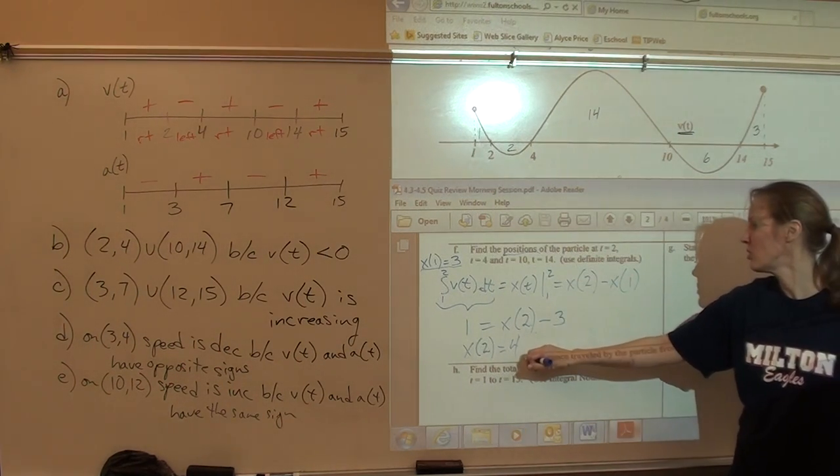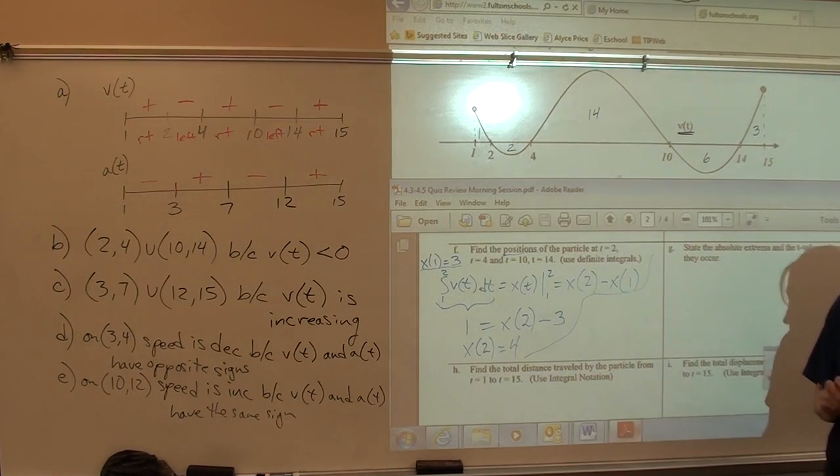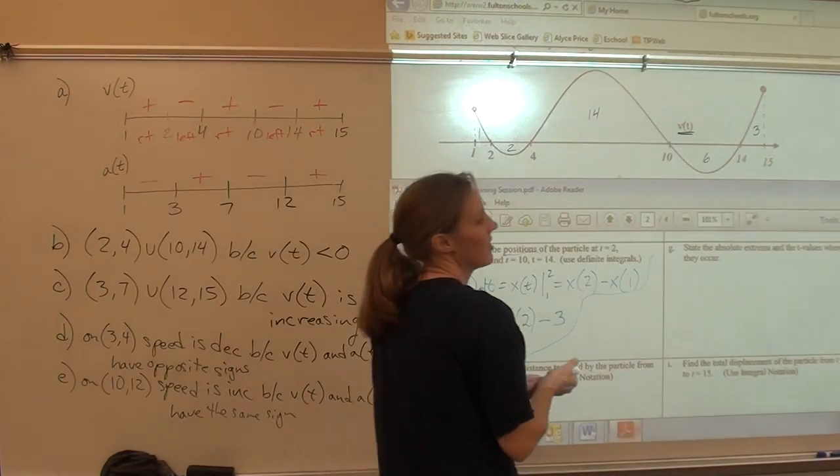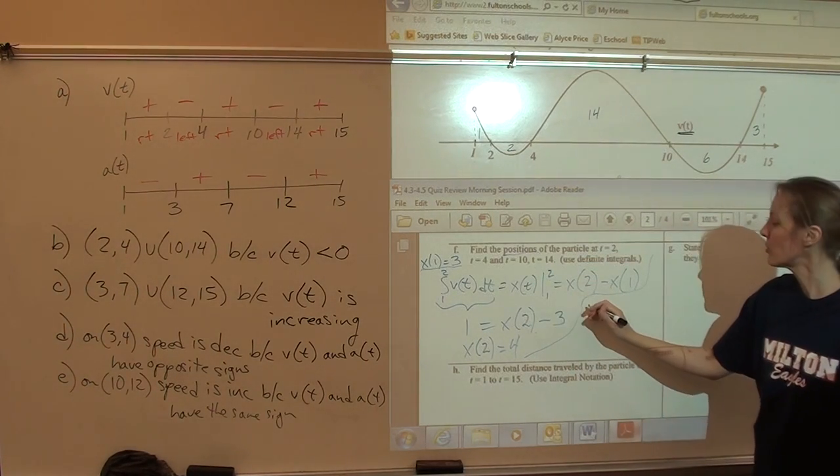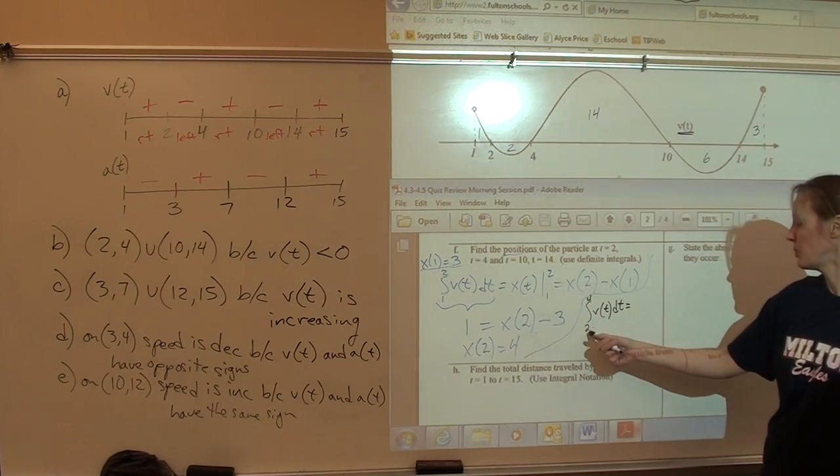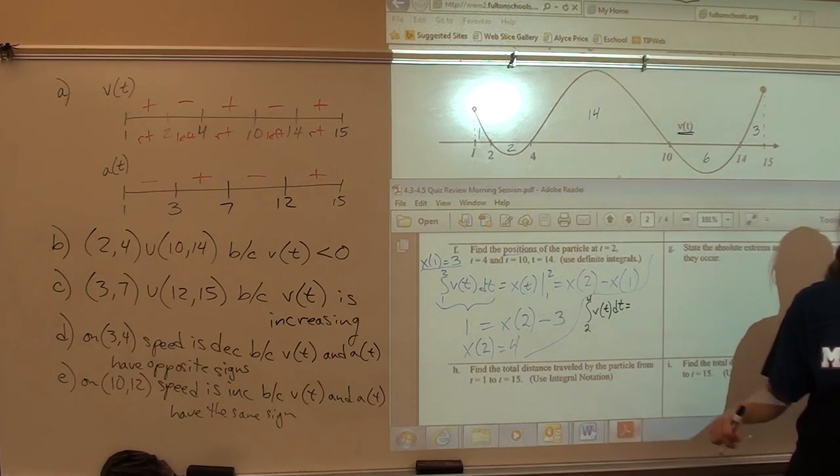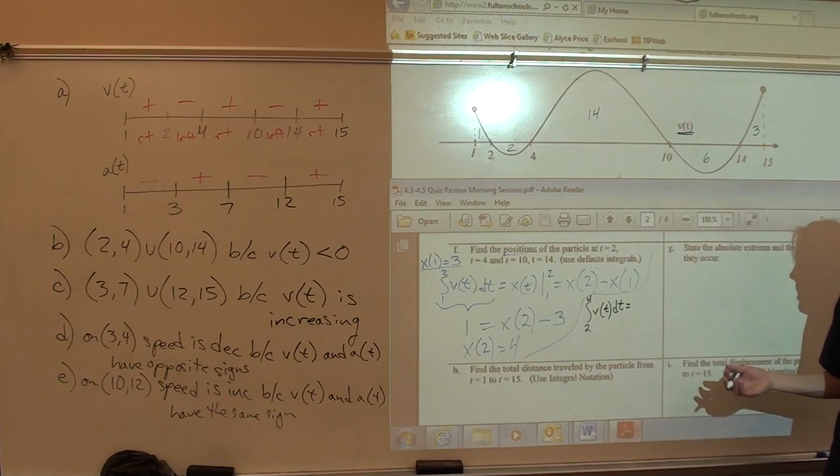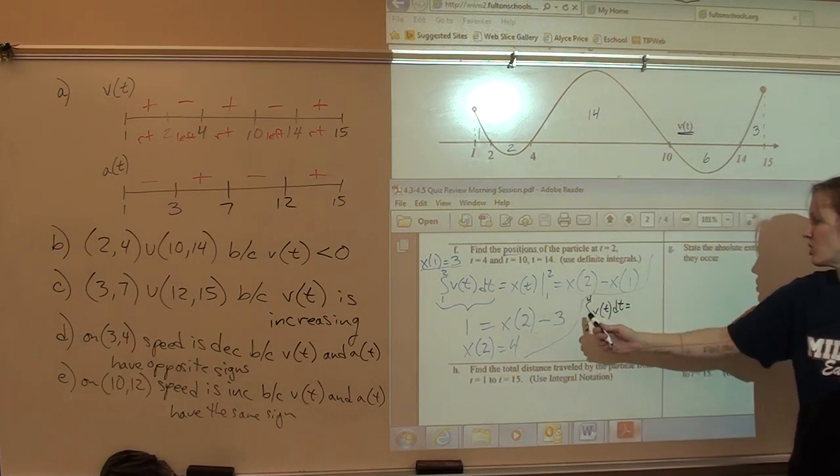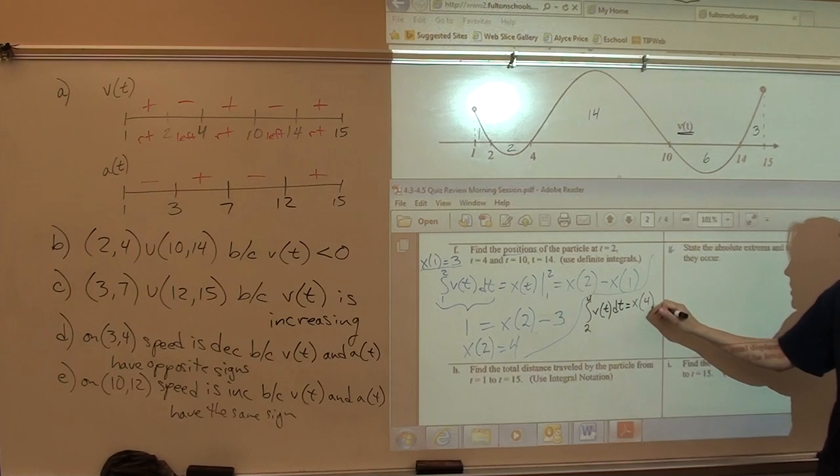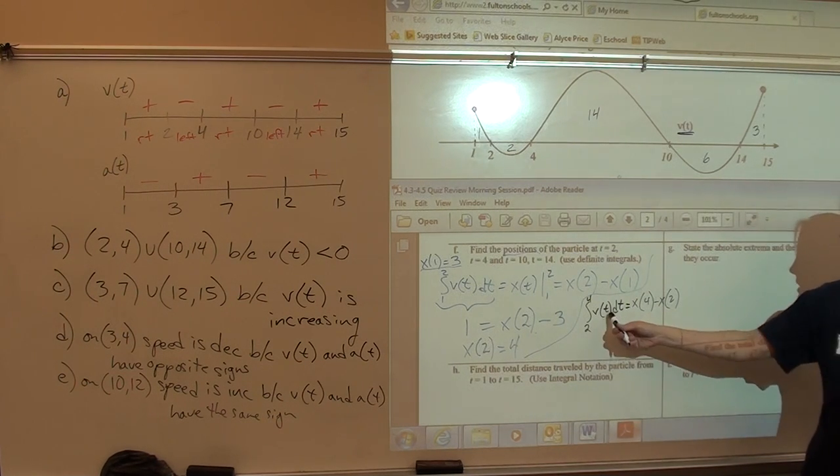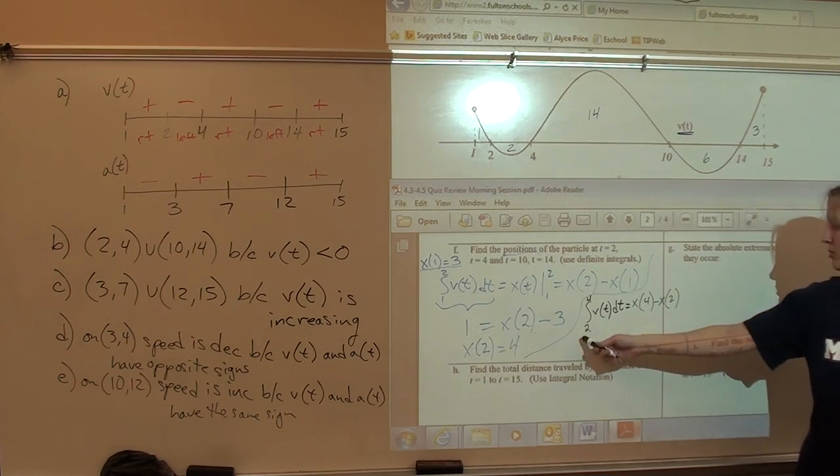So, now, if we were going to find x of 4, we'd have to set up the integral from 2 to 4 of the velocity. Because we know x of 2, we want x of 4. You can go 1 to 4. But, it'd actually be a little easier to go 2 to 4. So, from 2 to 4 of v of t. I'm going to skip writing this, and I'm just going to jump and say this is x of 4 minus x of 2. So, it's the antiderivative at the top limit minus the antiderivative evaluated at the bottom.